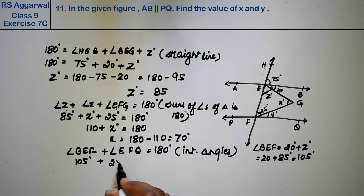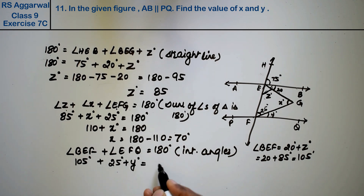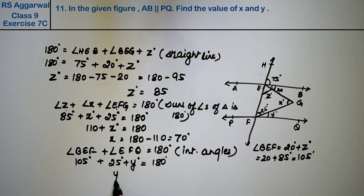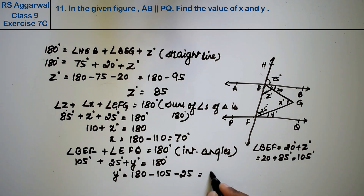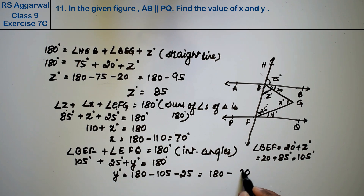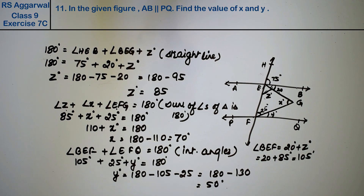Y is not known, and EFQ has 25 degrees known. So we write it as 105 plus 25 plus Y equals 180 degrees. So Y equals 180 minus 105 minus 25, that is 180 minus 130, which equals 50 degrees. So Y equals 50 degrees is the answer.